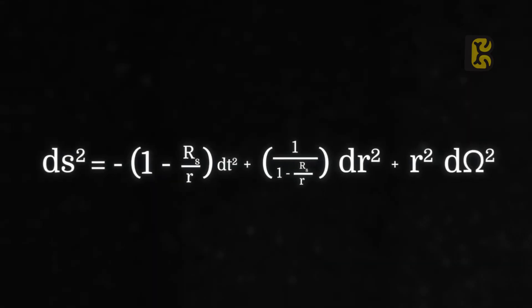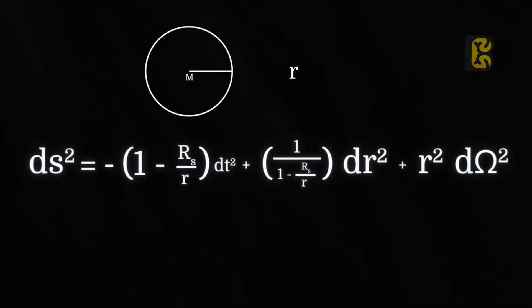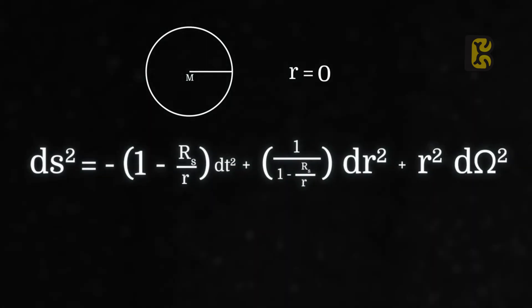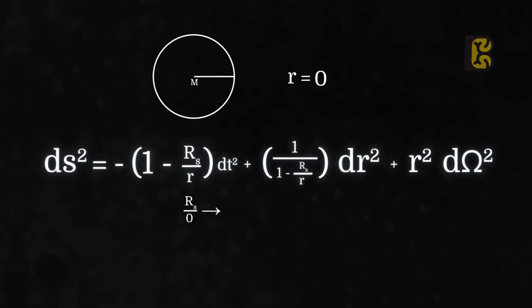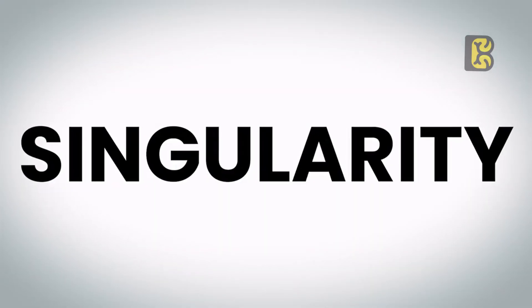However, some scientists identified a major problem in the Schwarzschild metric. When the small r, which is the closest radius to this point of mass, is set to zero in this equation, it results in infinity. This means that the equation has completely broken down because its results, breaking the laws of mathematics and physics, give unrealistic outcomes. This error is termed singularity in scientific terms. And it's not just one singularity. When we set the small r to be equal to the Schwarzschild radius in this equation, the equation shows another infinity.